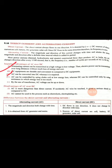The fourth advantage is that AC can be controlled by using a choke coil with low energy loss, whereas DC can be controlled only by using resistance, in which energy loss is too much. When we change the value of a resistor to change the current value in DC, electric energy converts into heat energy, causing energy loss. In AC, we use a choke coil to control the current value without significant loss.